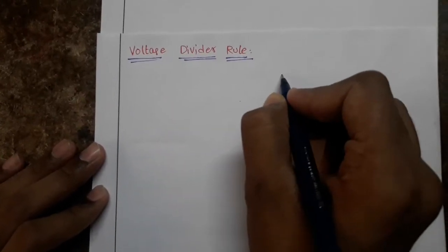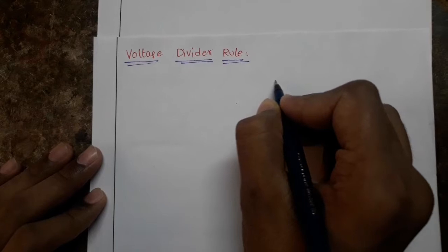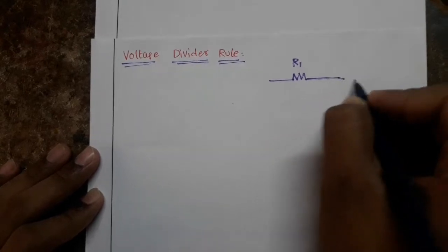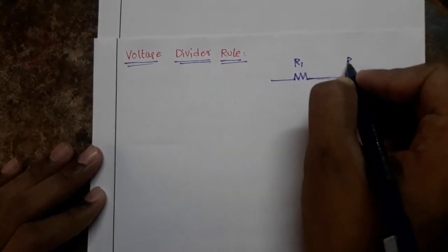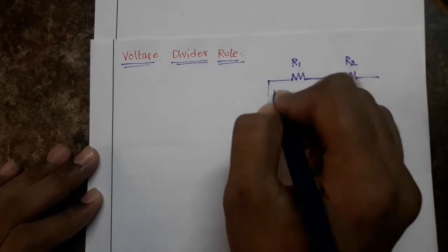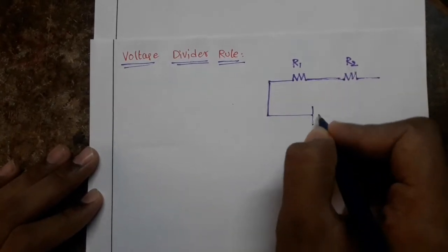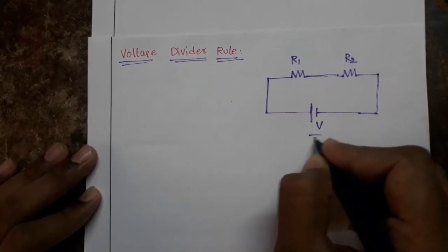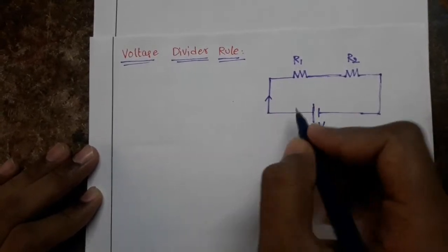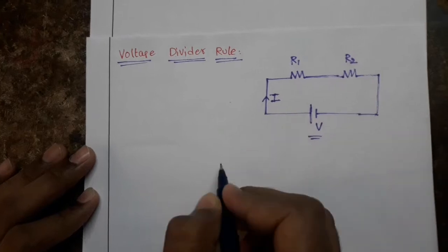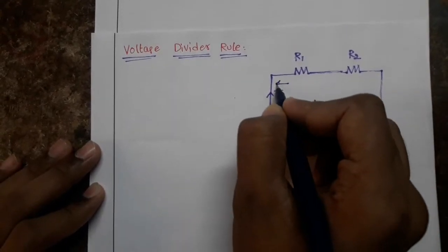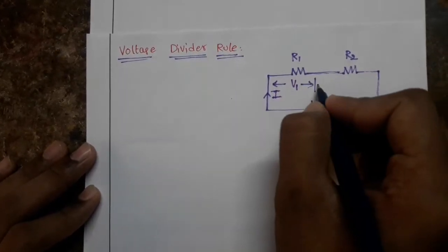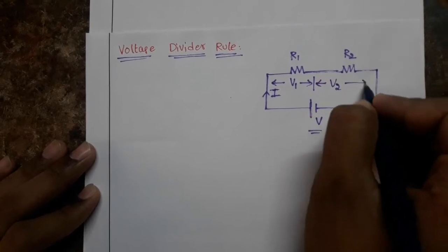For the voltage divider rule, I am taking the example of two resistances in series. This is resistor 1 of R1 resistance, and this is resistor 2 of R2 resistance. I am applying the voltage V volts by the voltage source. This is a closed path so current I will flow. This is voltage V1, the voltage drop across R1 resistor, and this is voltage V2, the voltage drop across R2 resistor.